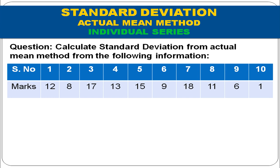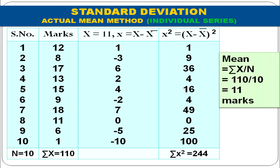Calculate standard deviation by actual mean method from the following data. Serial numbers 1 to 10, marks: 12, 8, 17, 13, 15, 9, 18, 11, 6, and 1. First step: calculate mean = Σx / n = 110 / 10 = 11 marks. Next, take deviations from mean without ignoring signs: 12 − 11 = 1, 8 − 11 = −3, and so on.